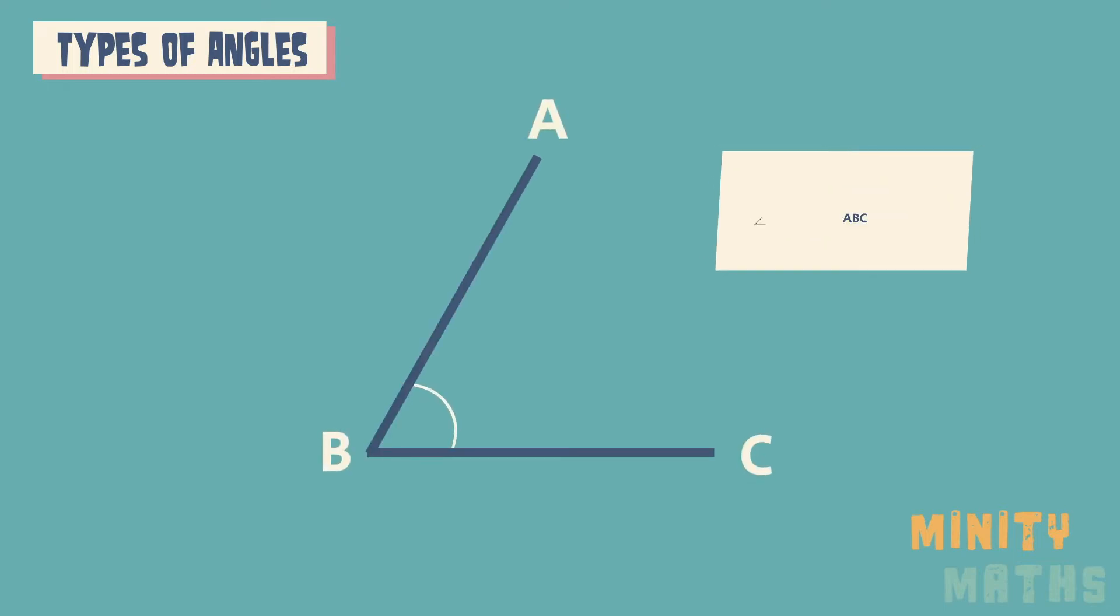Angles are often labelled in relation to the line segments that they are between, where points are labelled with letters. However, for simplicity we often use single letters or symbols such as these to label an angle.